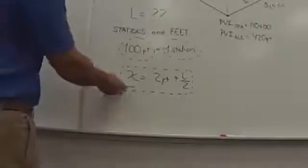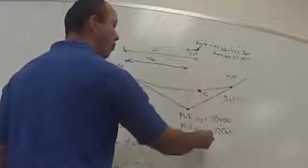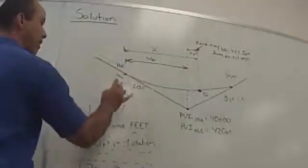So now that I know x, what will be the elevation at that point? The elevation at that point will be equal to my 420. So if I want to calculate the elevation of my PVC,